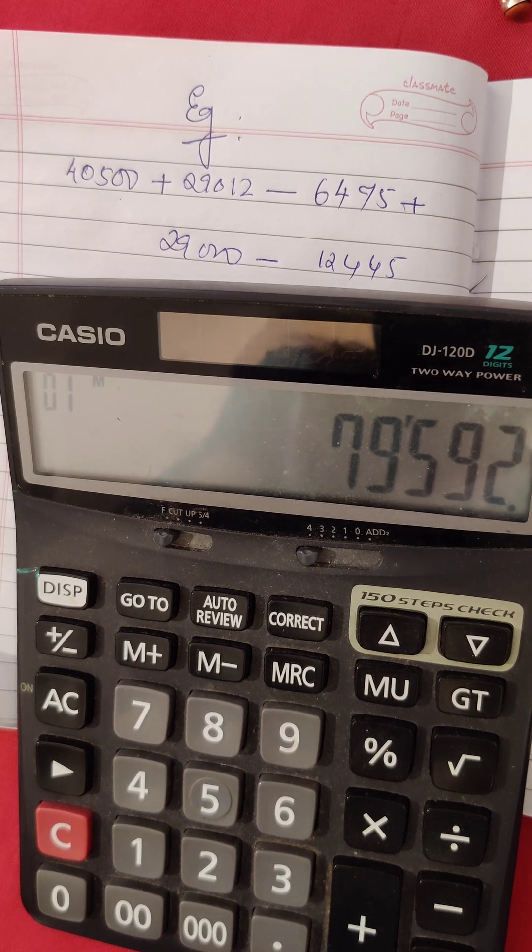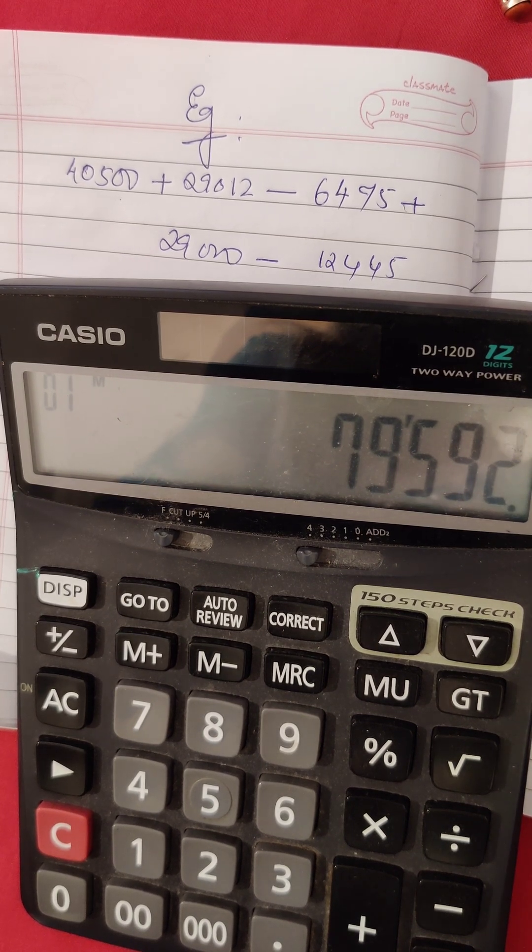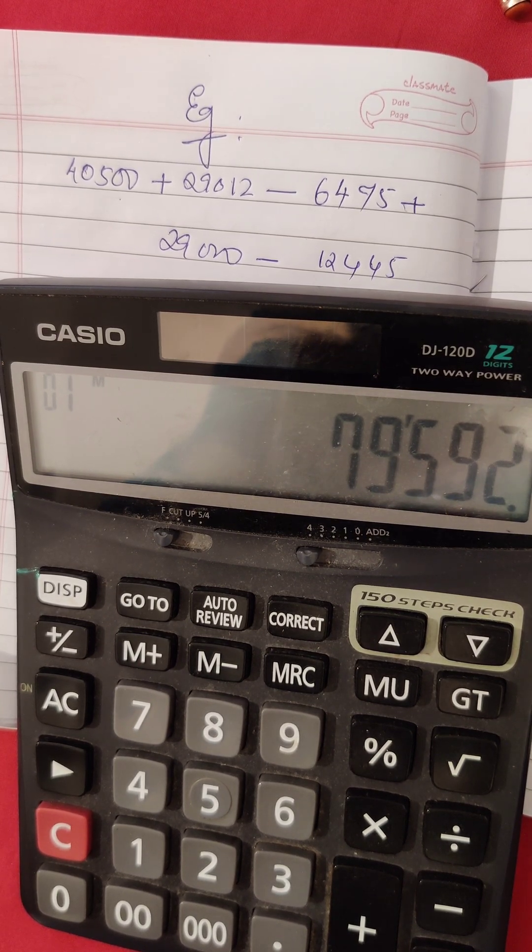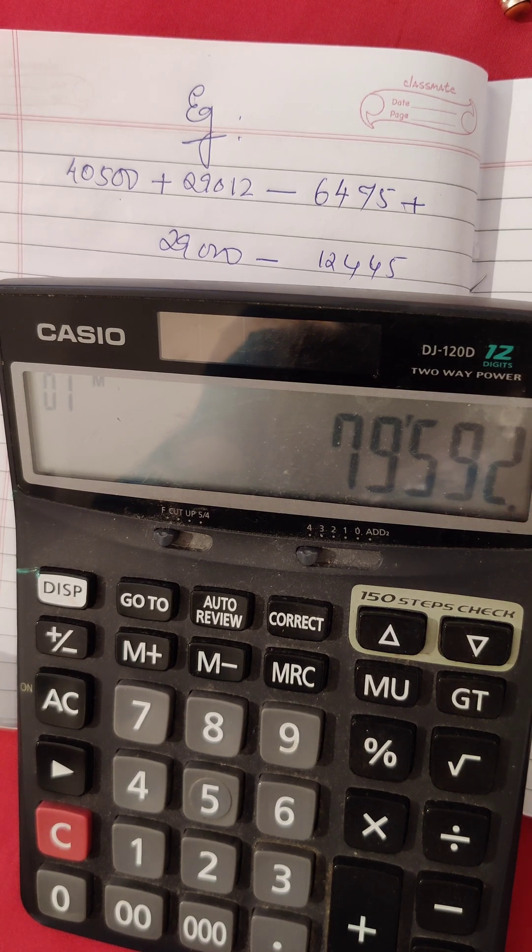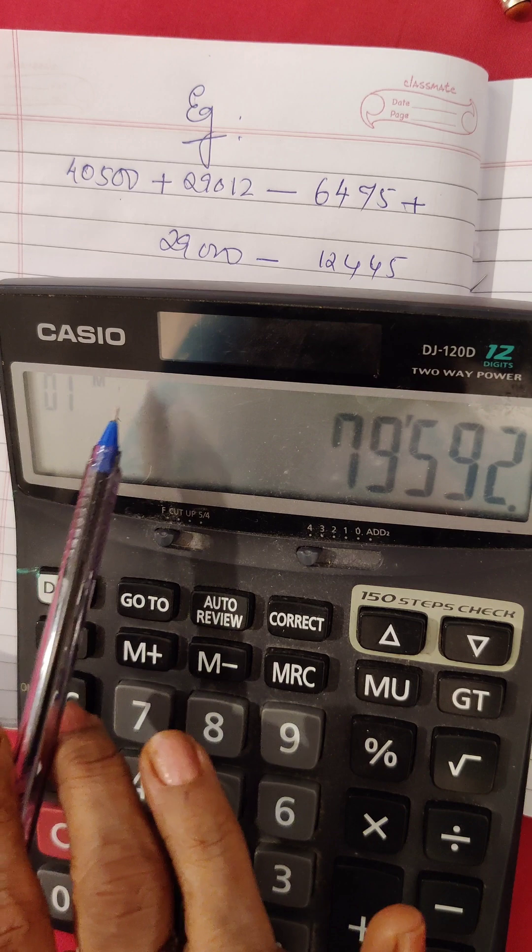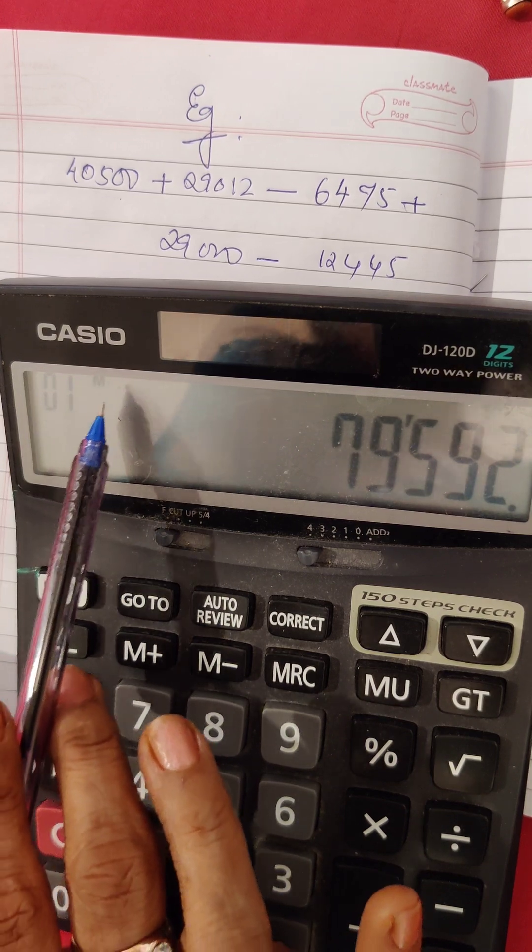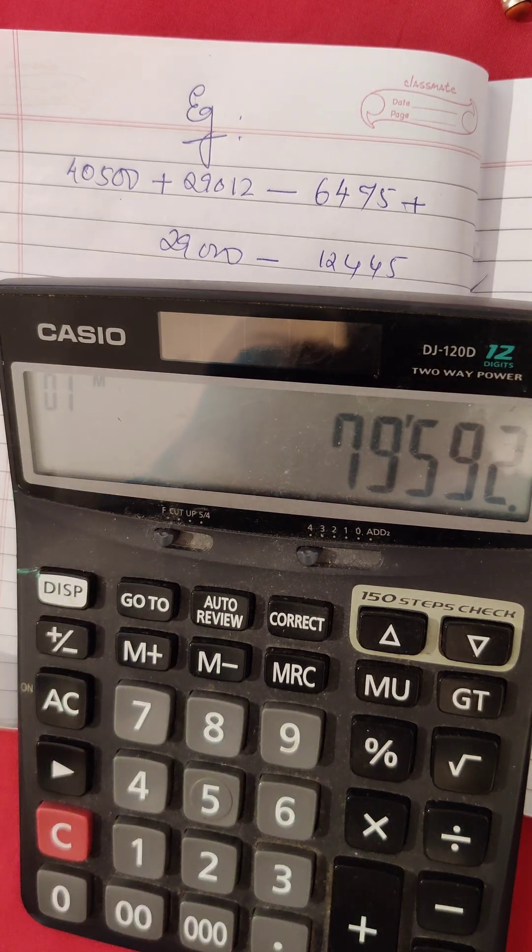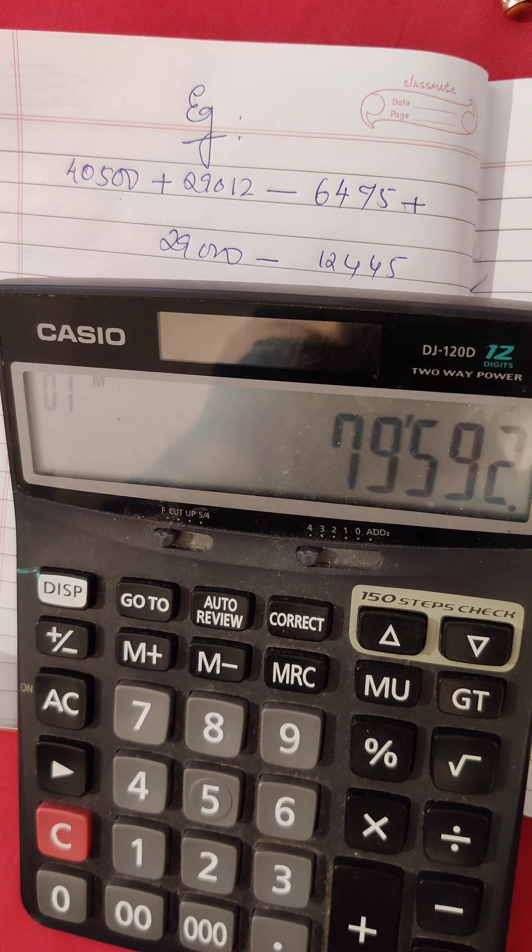Here there is a word of caution. Once you use the memory plus and memory minus buttons and you got the answer as 79,592, you will see that this number is stored and on the display of the calculator you will find the letter M. Whenever you find the letter M, it means something is stored in the memory.